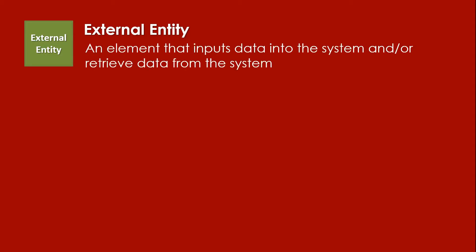An external entity is an element that inputs data to the system or retrieves data from the system. So external entities are the ones who give data to the system. They also receive or retrieve data from the system, or both. An external entity can send data to the system or also receive data from the system.